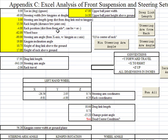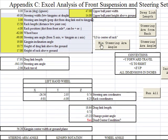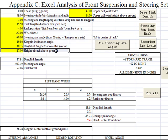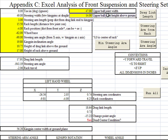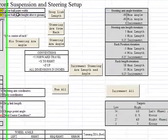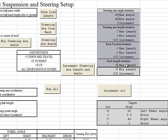So let's get into the code right now. The box that I just highlighted contains vehicle characteristics — the height of the rack above ground, the wheelbase, how high the upper ball joint is above the ground. These are just your vehicle characteristics that you input.